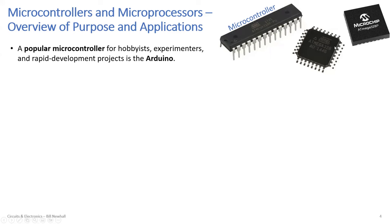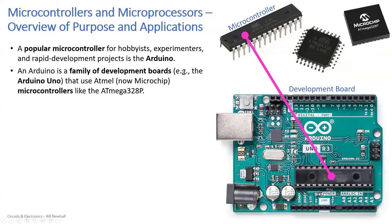A popular microcontroller for hobbyists, experimenters, and rapid professional development is the Arduino. The Arduino is really a board with a microcontroller on it and the whole development environment — it's a family of development boards like the Arduino Uno and Arduino Mega. They use Atmel microcontrollers — Microchip bought Atmel and now makes the microcontrollers for Arduino, and they've branched out into other manufacturers too. An Arduino is a board and a development environment; strictly speaking, the microcontroller is the chip on the board.